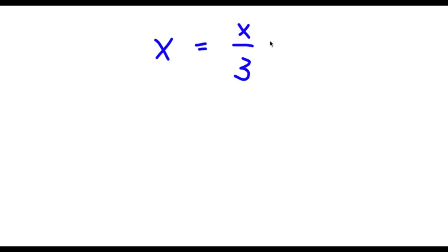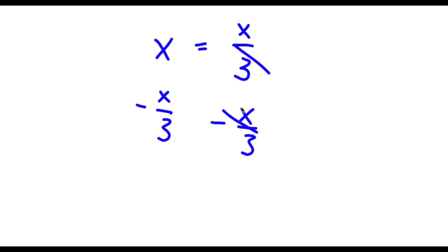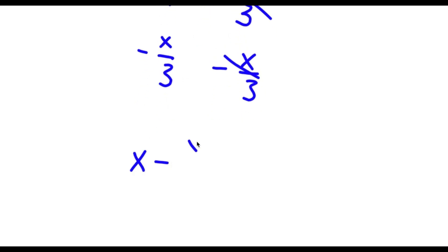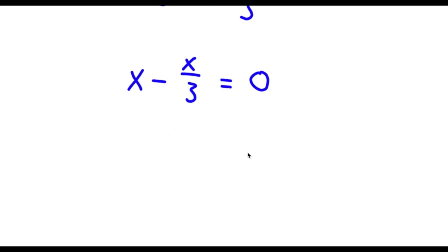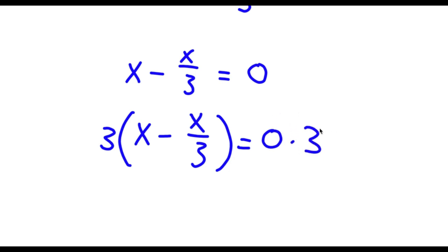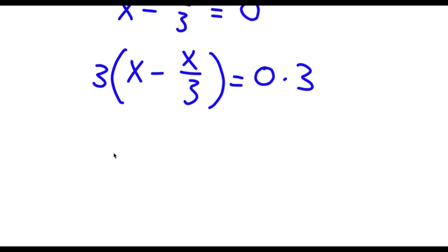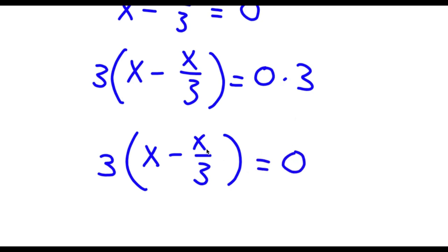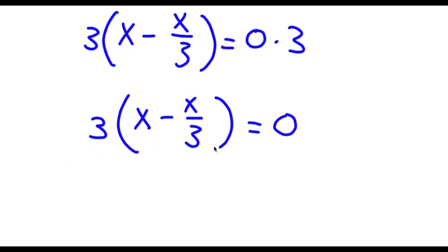Alright, so I have x is equal to x over 3. The first thing I'm going to do is subtract x over 3 on both sides. These two are going to cancel out and I'm left with x minus x over 3 is equal to 0. From here I'm going to multiply both sides by 3. So now I have 3 times x minus x over 3 is equal to 0 times 3. Well 0 times any number is simply 0, so 0 times 3 is 0. So now I have 3 times the quantity x minus x over 3 is equal to 0.